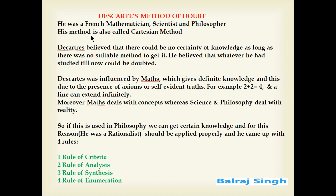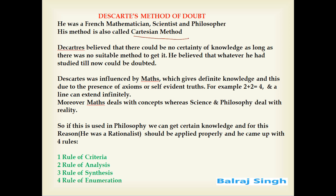Hello friends, welcome to today's class. Today we will be discussing Descartes' method of doubt. Descartes was a French mathematician, scientist, and philosopher, and his method is also sometimes called the Cartesian method. The Cartesian method arose because Descartes believed that there could be no certain knowledge as long as there was no suitable method to get there. He also believed that whatever he had studied till now could be doubted.